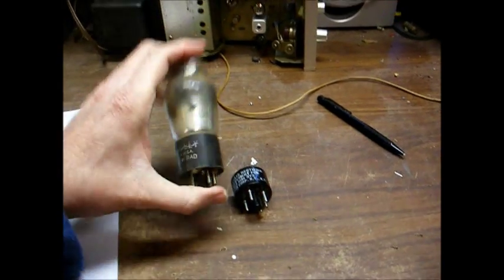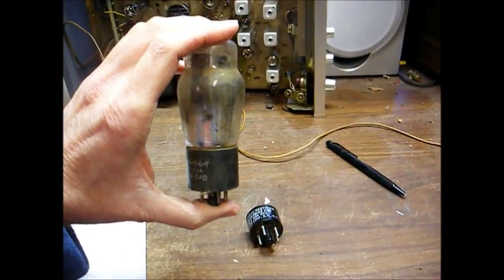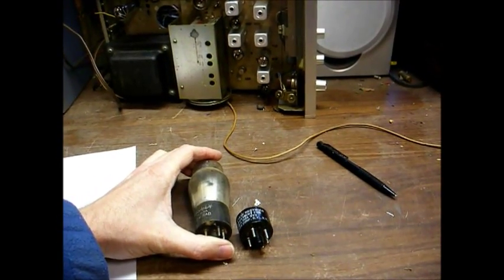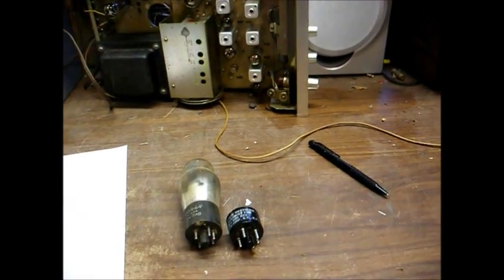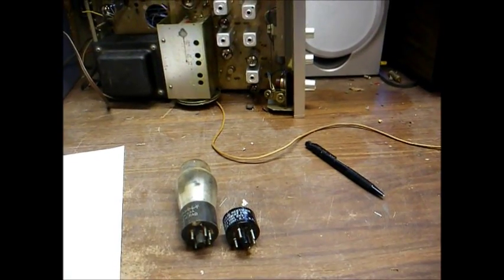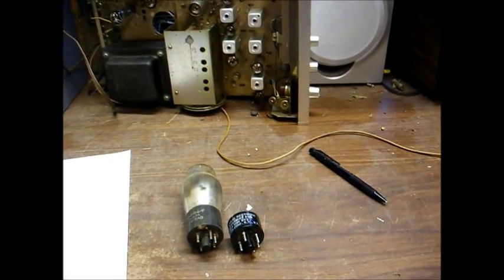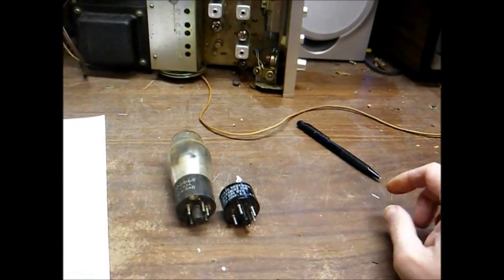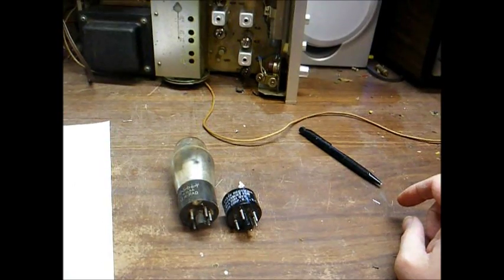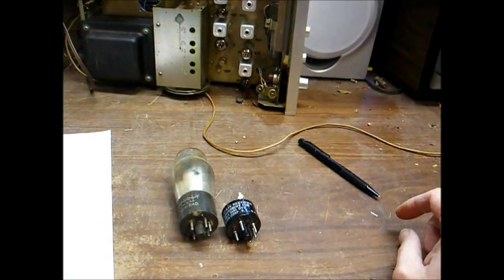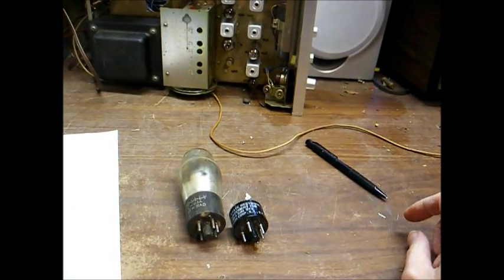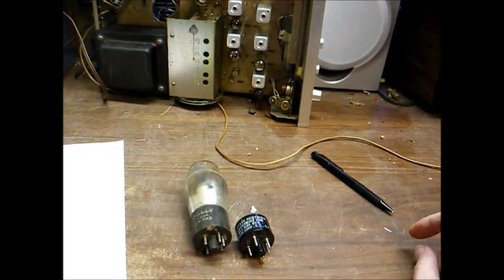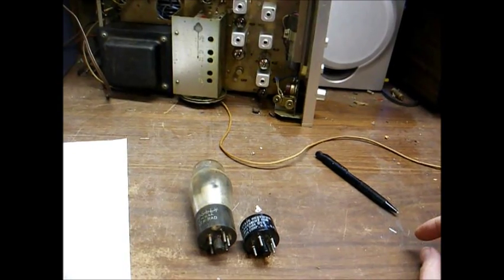What you see on the left here is a Type 5Y3 full-wave vacuum tube rectifier. These are commonly used in radios and phonographs from the 30s, 40s, 50s, 60s. And there was also a 5U4, which is basically a larger version of the same tube that will handle greater current capacity. It was used in a lot of television sets and hi-fi equipment.